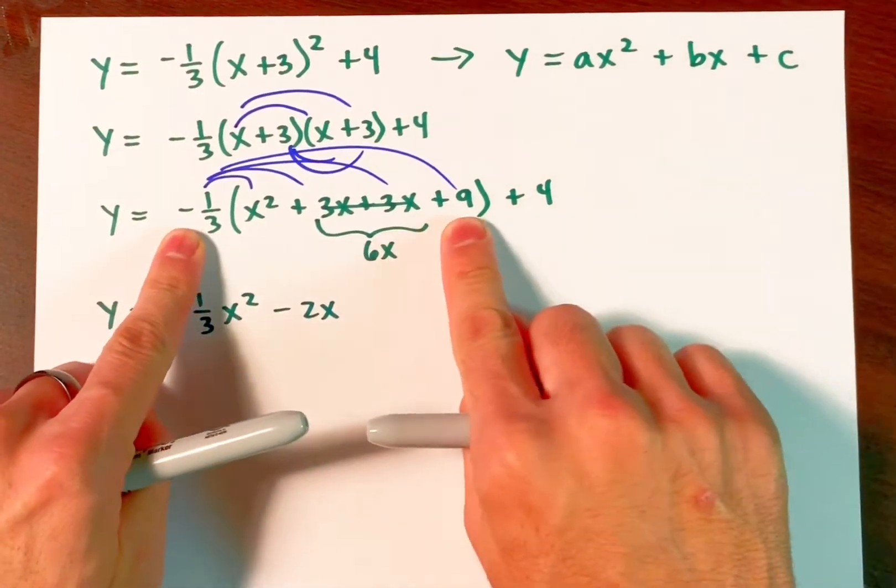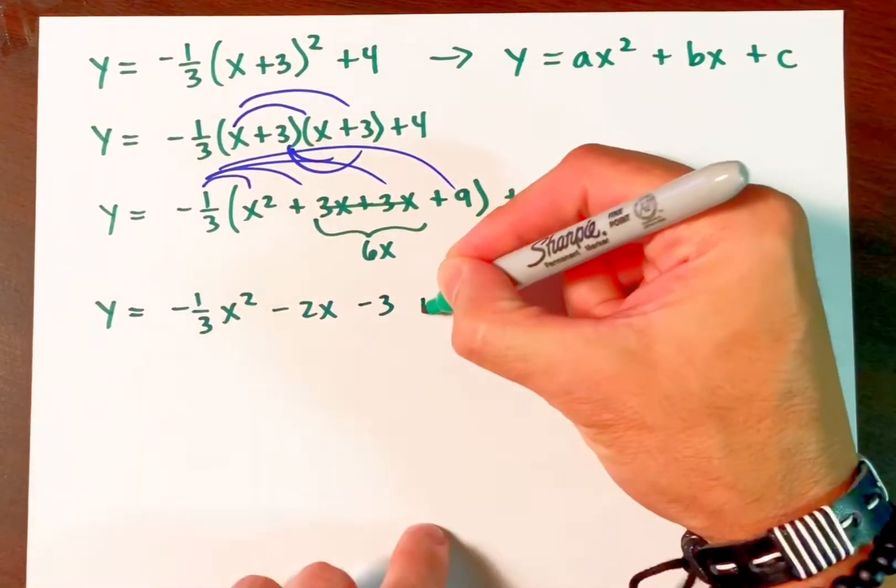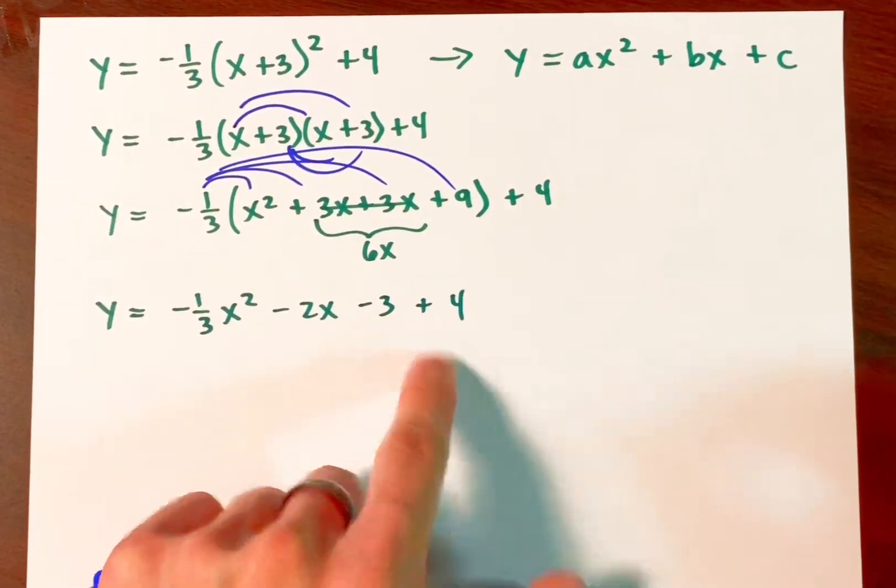That times that produces negative 3 and then just drop the 4 like it's hot. Now we can actually combine these, yes?